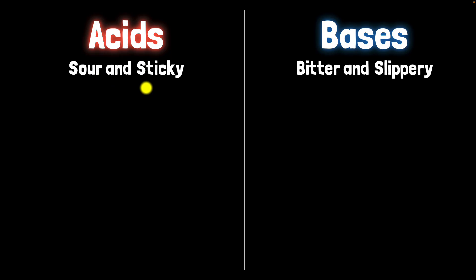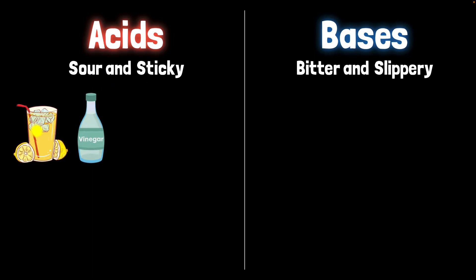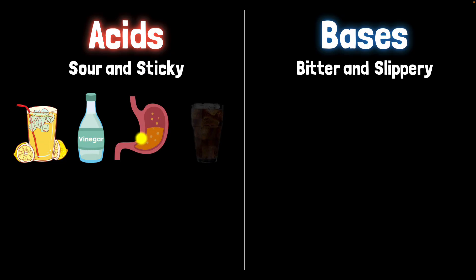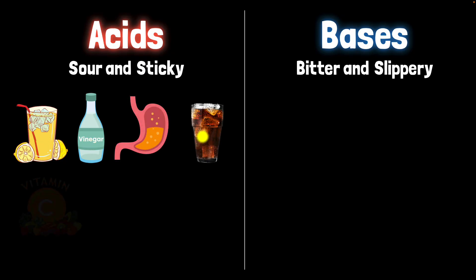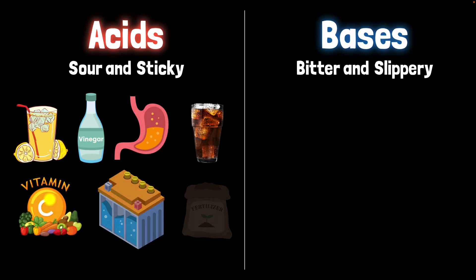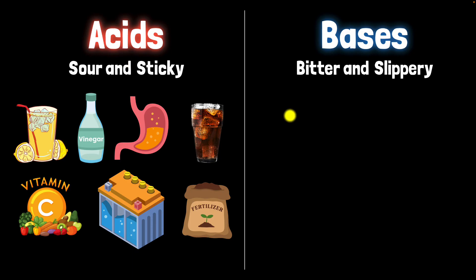Let's take some examples. Sour and sticky — the most common ones that come to mind are lemonade and vinegar. But there are others, like stomach acid, carbonated drinks, vitamin C. You have acids inside batteries and even in fertilizers. They all fall under the category of acids.